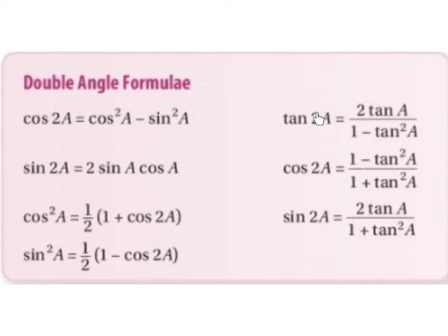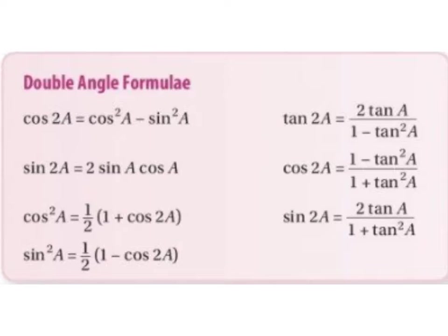Tan of 2a equals 2 tan of a divided by 1 minus tan squared a. Cos of 2a equals 1 minus tan squared a divided by 1 plus tan squared a. Sine of 2a equals 2 tan of a divided by 1 plus tan squared a.